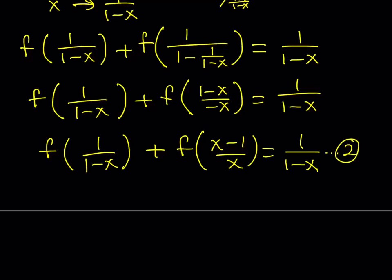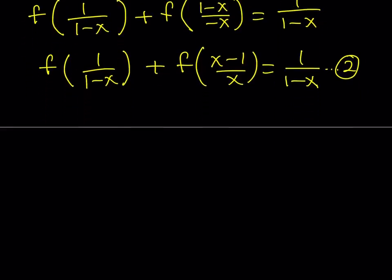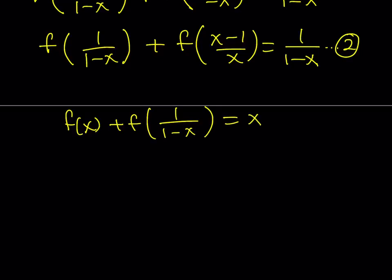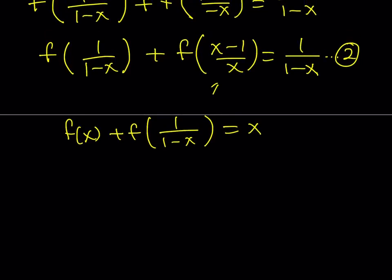We do need a third equation, and then we'll put it all together and solve the whole thing as a system. Where does the third equation come from? Our original problem is f(x) + f(1/(1-x)) = x. Notice that we got a new term, which is (x-1)/x, so it would make sense to replace x with that.